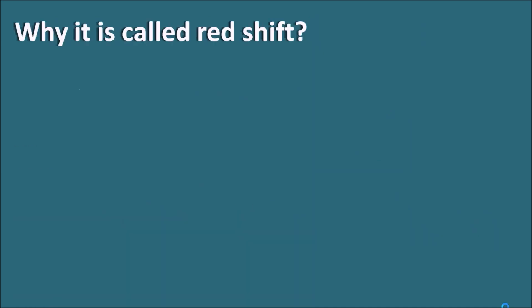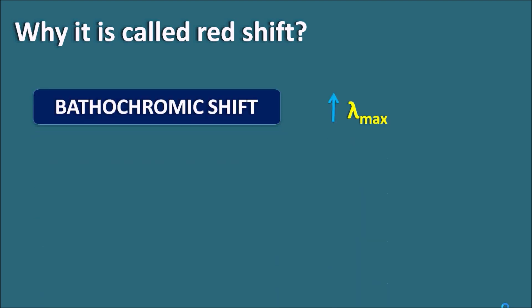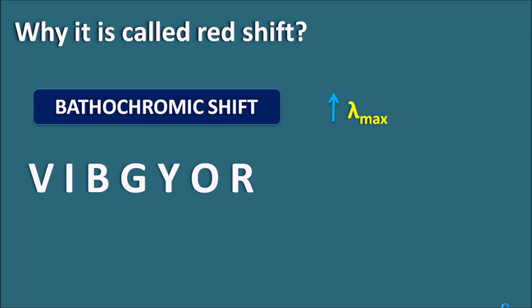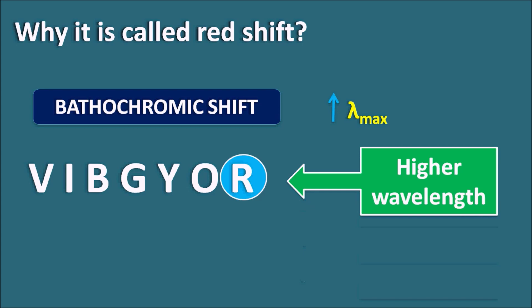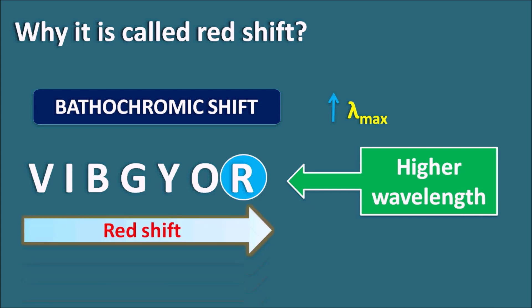Bathochromic shift is an increase in lambda max and it is called a red shift. We know the different types of radiation in the visible region, indicated as VIBGYOR — from violet to red. When travelling from violet to red, wavelength increases. That is why bathochromic shift is indicated as red shift. It is important to remember that although bathochromic shift starts with the letter B, it should not be confused with blue shift — bathochromic shift is the red shift, meaning lambda max increases.